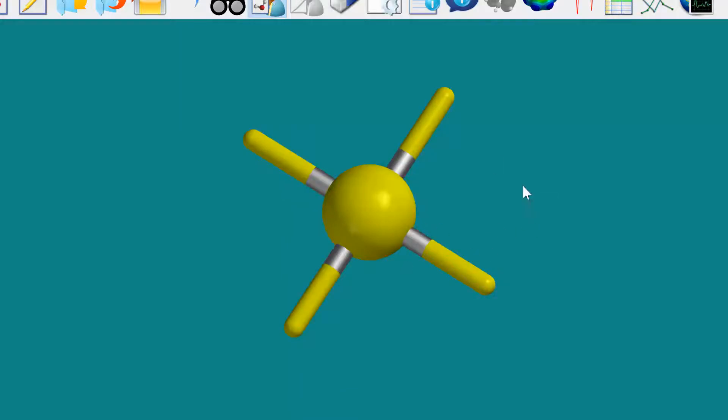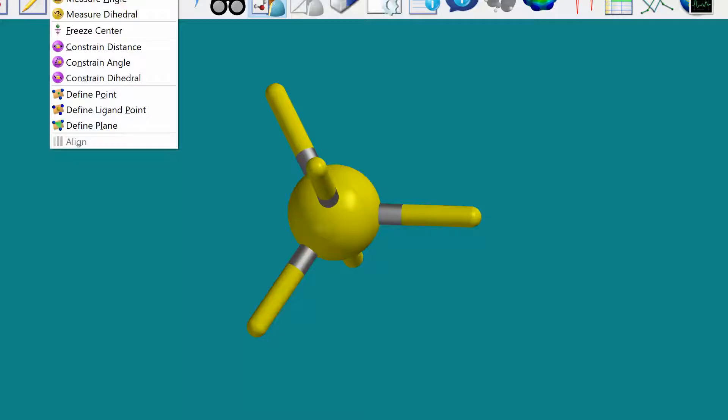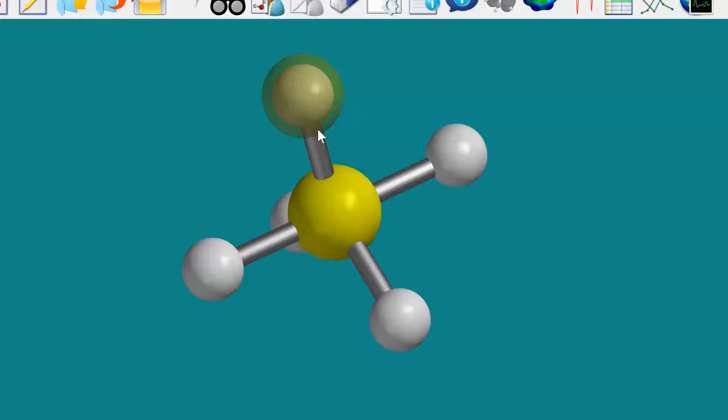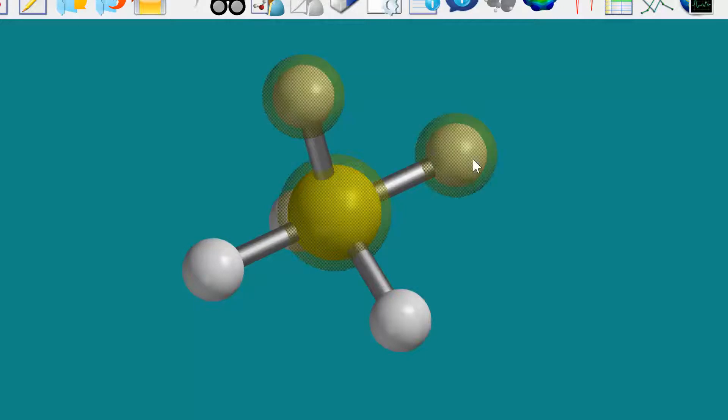And then trigonal bipyramid, you have 90 and 120. And this program can actually calculate the bond angles for you. If you just go to Geometry, and then like Measure Angle, and then you click on 3, it'll show you what the bond angle is in the corner.